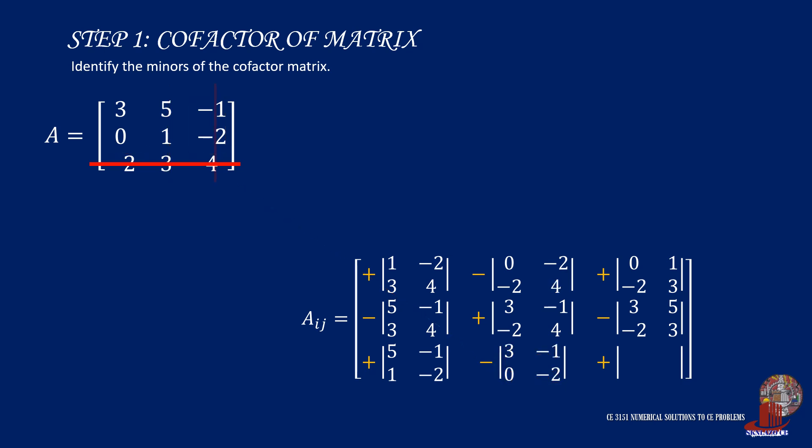Now have the last covering column on the third, and elements for A33 are 3, 5, 0, and 1.